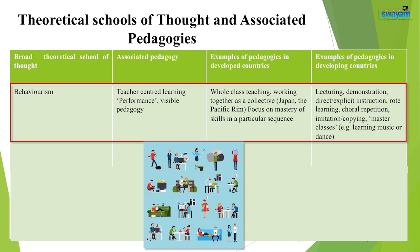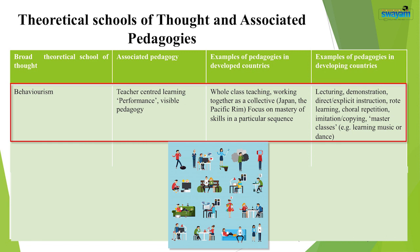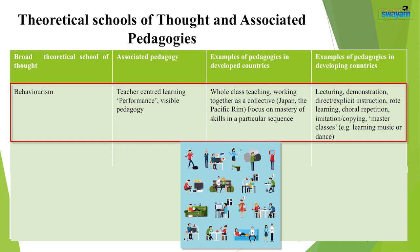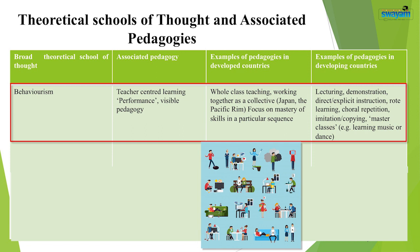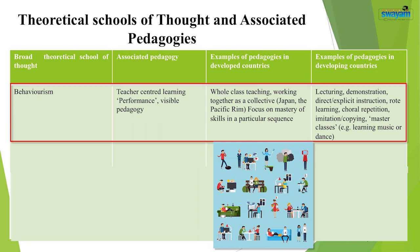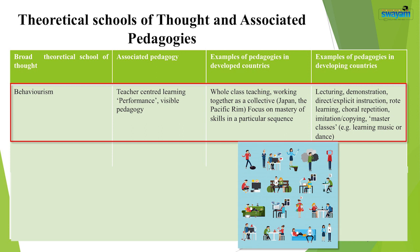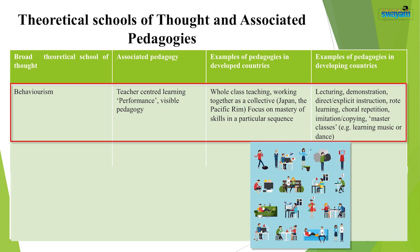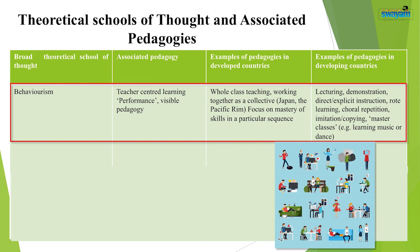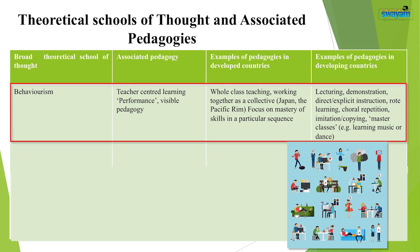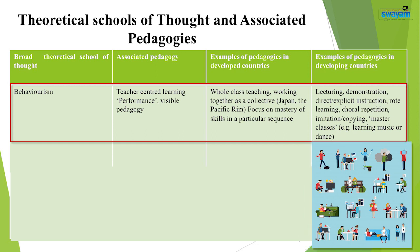Examples of pedagogies supporting behaviorism include lecturing, demonstration, direct or explicit instruction, rote learning, choral repetition, imitation, copying, and master classes. In behaviorism, it is the teacher who directs, explains, gives examples, demonstrates, and repeats. The student is a passive listener, following the instructions of the teacher and responding to the stimulus provided by the teacher.